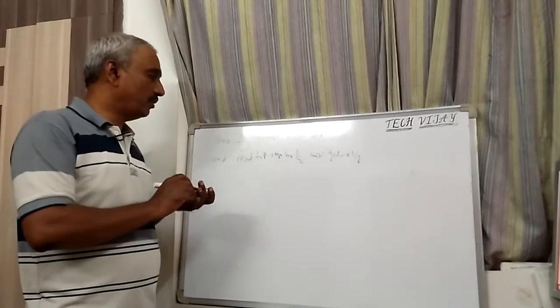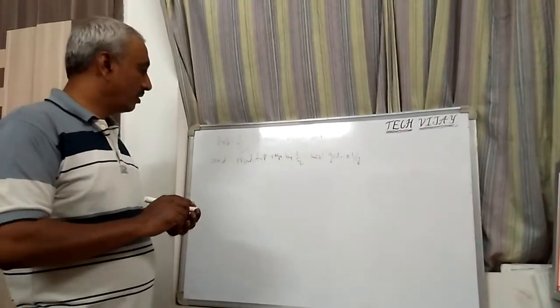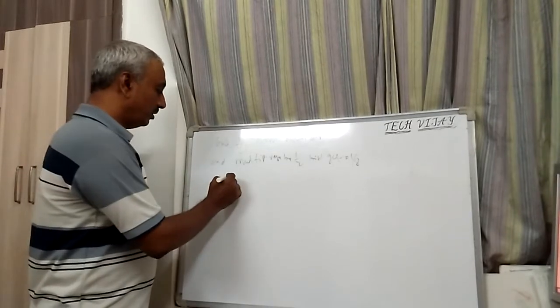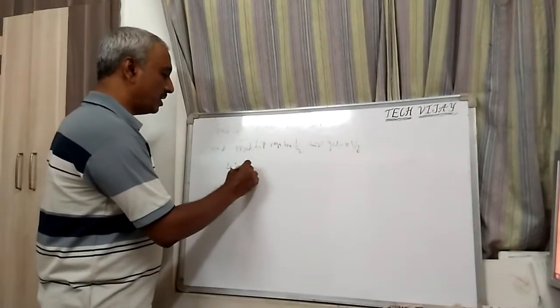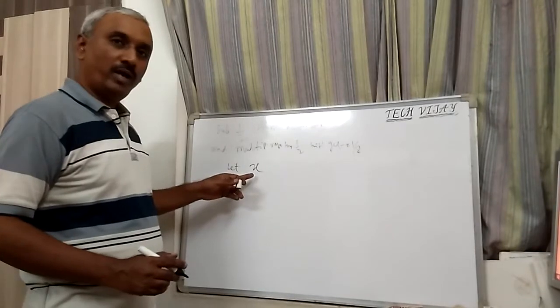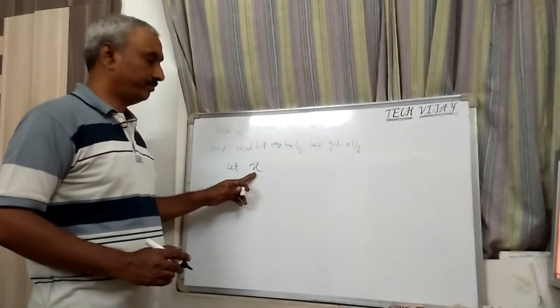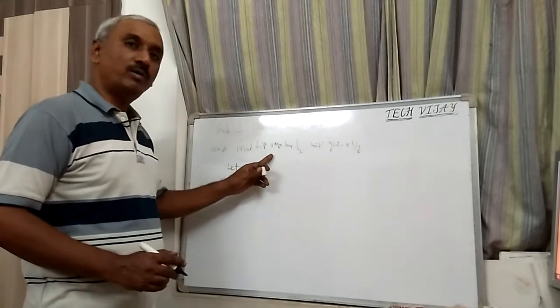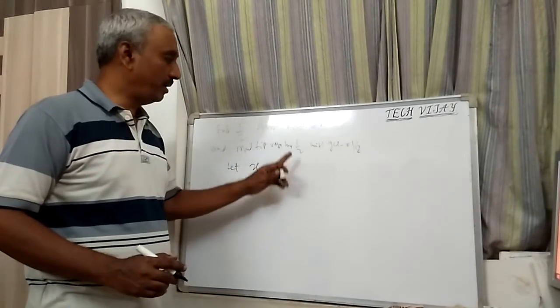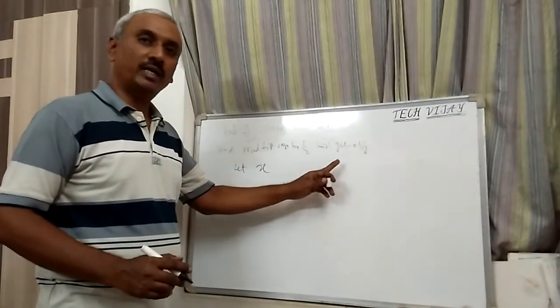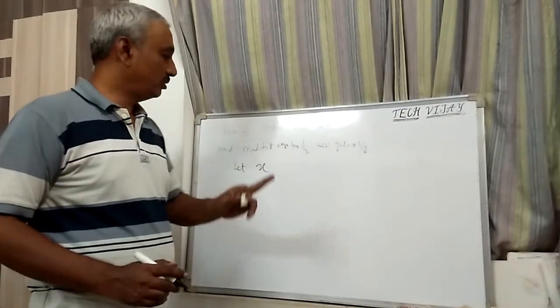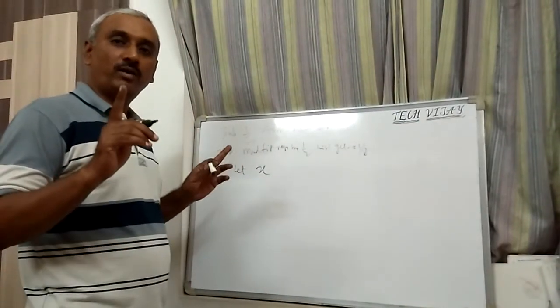Here he has given the question a number. Let us assume it as x. We have to subtract 1/2 from this number and multiply the result by 1/2. Then we will get the answer as 1/8. So then you have to find the value of x.